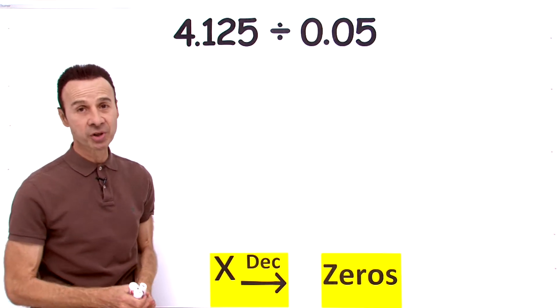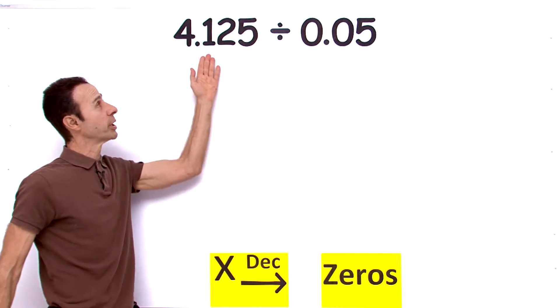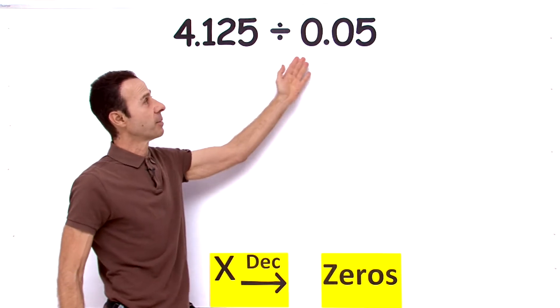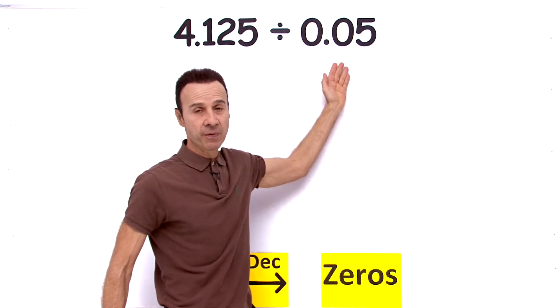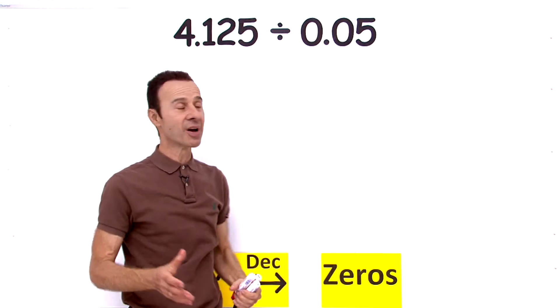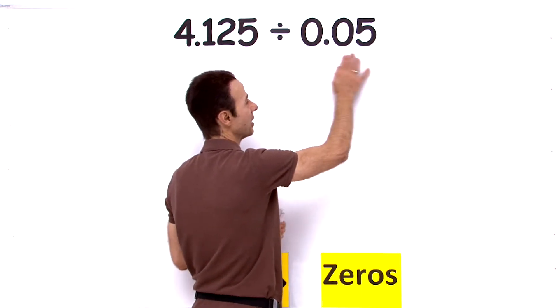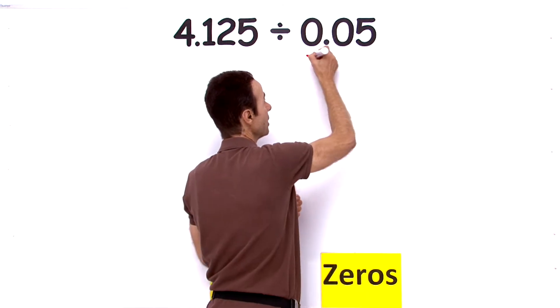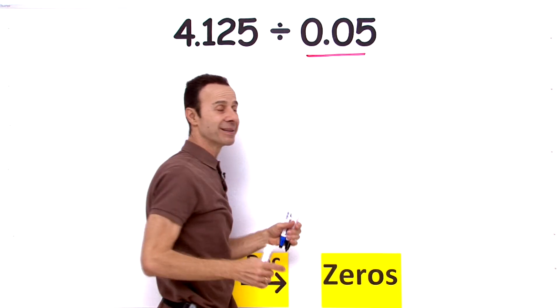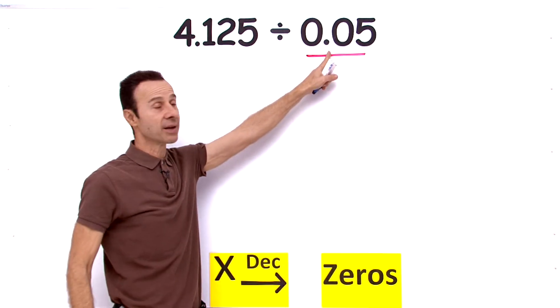Okay, in this video episode I am going to show you how to divide 4.125 divided by 0.05. Now the first thing you've got to recognize is when you've got decimal places here on the divisor, you need to eliminate, you need to get rid of that decimal point right there.